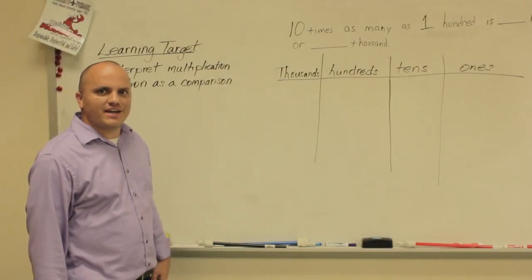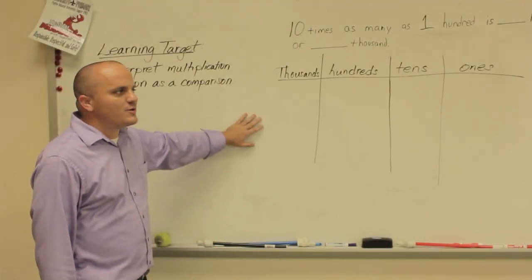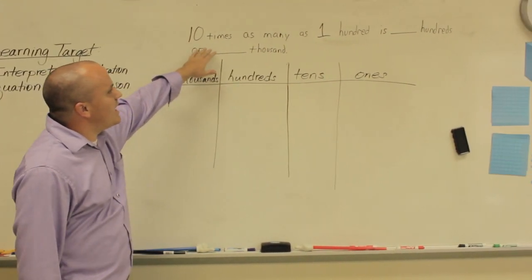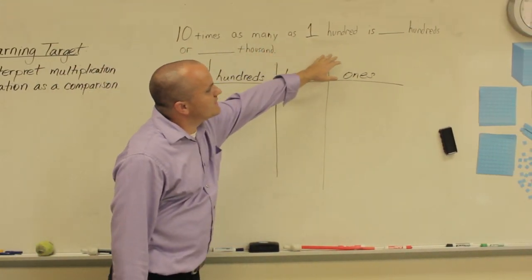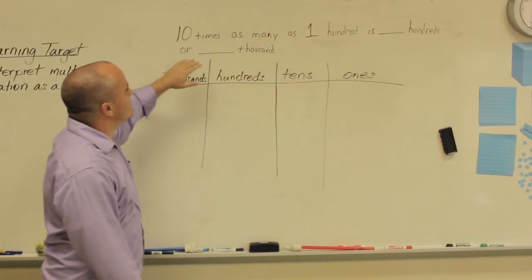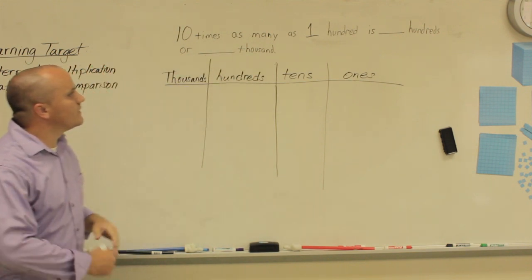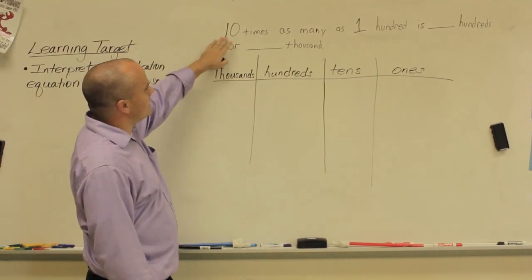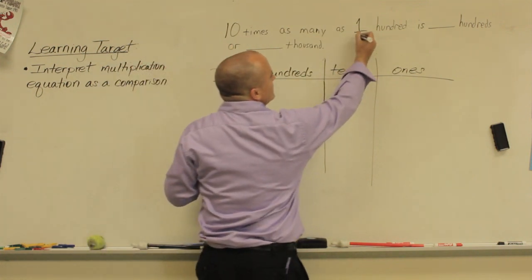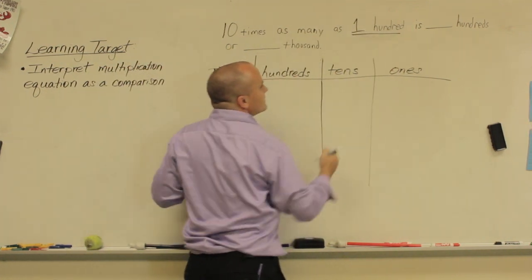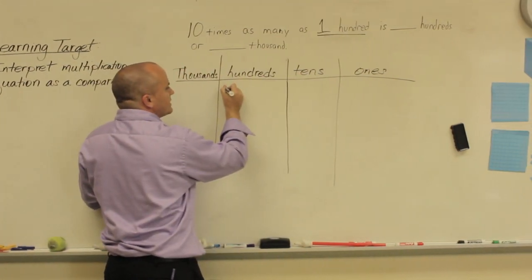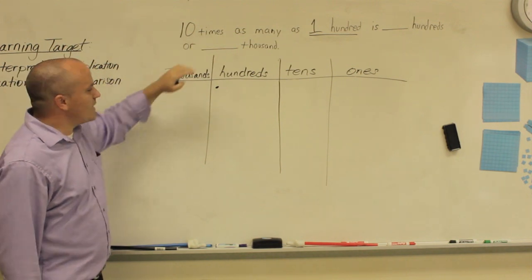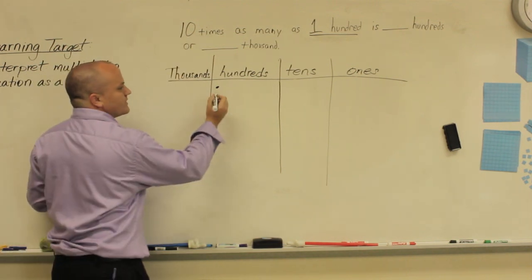Good afternoon. This is Mr. Messina again explaining question 2A from your homework this evening. Question 2A asks: ten times as many as one hundred is blank hundreds or blank thousand. The first thing I want to look at is that I'm saying there's ten times as many as one hundred. So I have one in the hundred place, but it wants to know ten times that many, so I need to figure out ten hundreds.